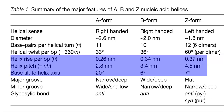Base pairs per helical turn: 11 in the A form, 10 in the B form, and in Z form there are 6 dimers totaling 12 base pairs. The helical twist per base pair is 33 degrees in A form, 36 degrees in B form, and 60 degrees in Z form due to the dimeric condition.